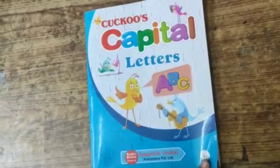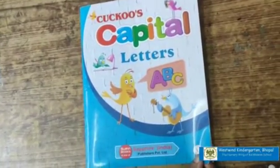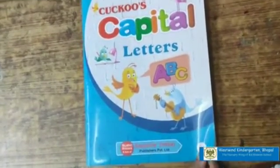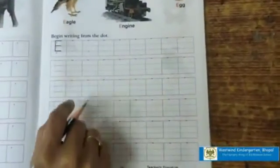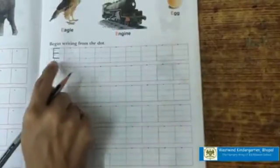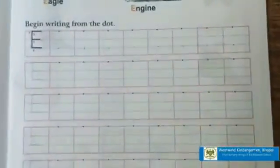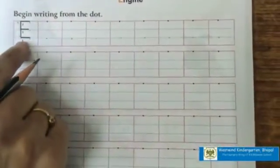Good morning, children. Today we are going to write in your English workbook. This is your English workbook. This is letter E. Today, we are going to write letter E.